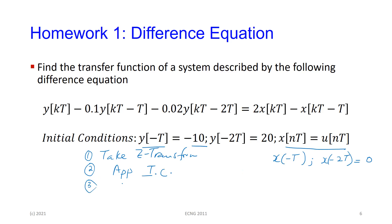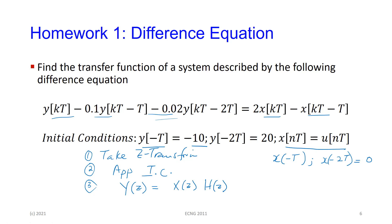Step three: you have all the Y(Z) terms, you express Y(Z) equal to X(Z) on that side, and then you simplify. There will be some components that have Y in them, some that have X in them, and some that only have Z. You group them, and when you get it into this form, you substitute X(Z) which is the Z transform of the unit step. And you have the answer. We did this in class, but it's good to revise it again.